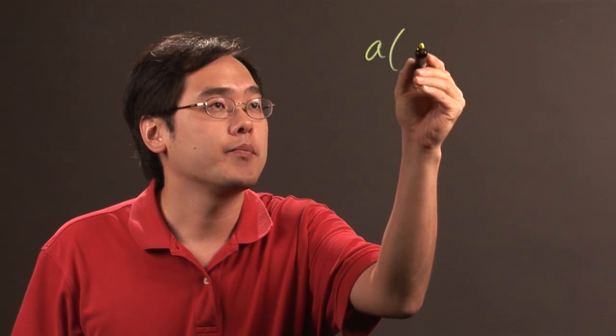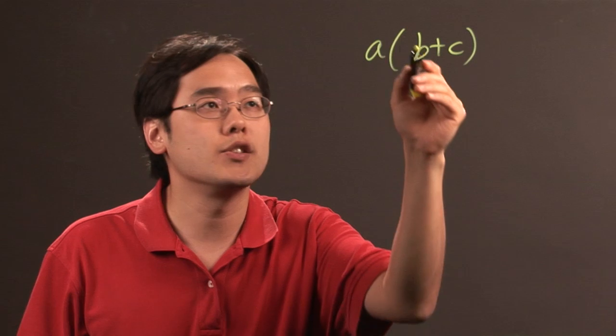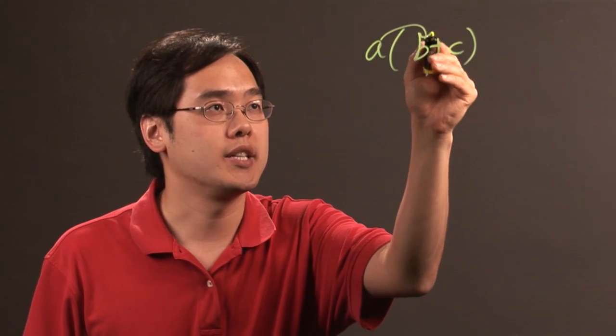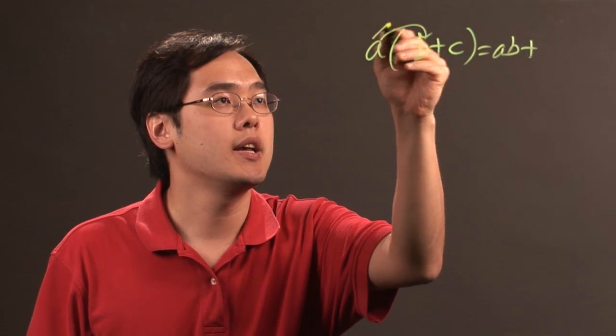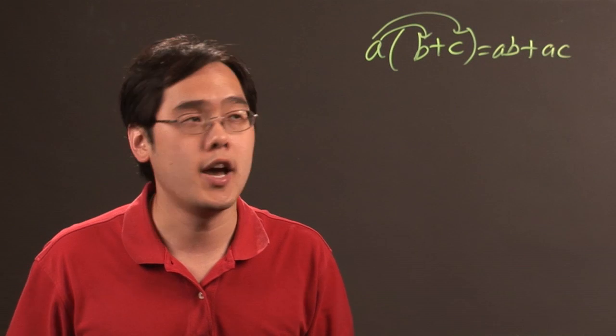If you have A multiplied by parentheses B plus C, the idea here is you take the outside and you multiply by every term on the inside. So A times B is AB, plus, carry over the sign, A times C is going to be AC. Now where this is applied oftentimes is algebra on up.